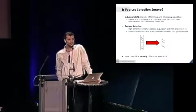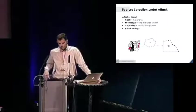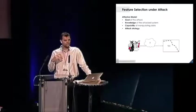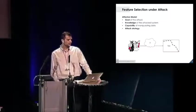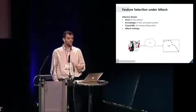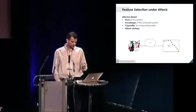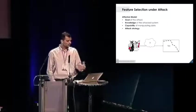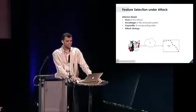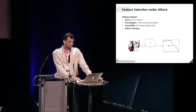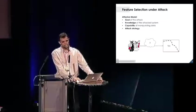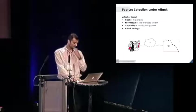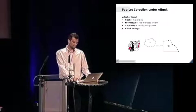To answer this question, in this work we devised a framework that allows one to think about potential attacks that may be carried out against feature selection algorithms. The framework consists of different characteristics. One has to model the attacker in terms of the attacker's goal, what they know about the system, and how they can manipulate the input data. After you model these three characteristics, you can formalize an optimal attack strategy as an optimization problem. This is just to give a quick sketch of the framework.